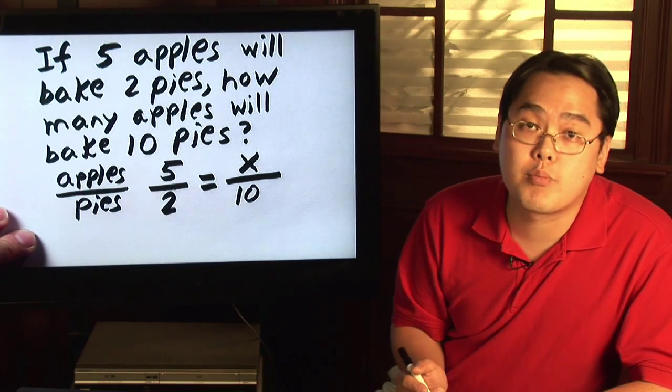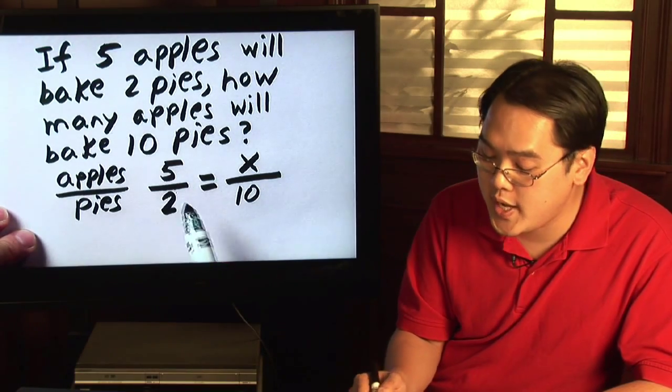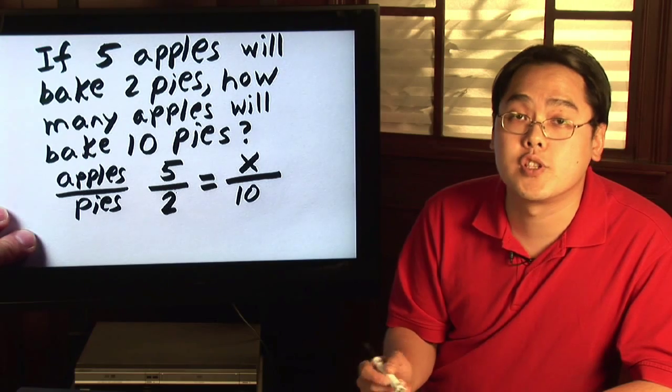To solve any proportion problem when you have one fraction on one side and one fraction on the other side, you simply cross multiply.